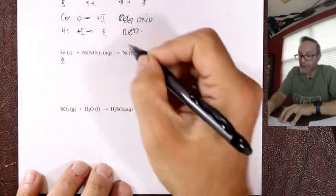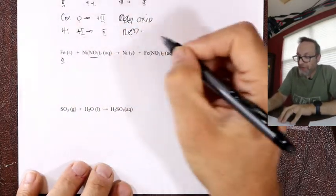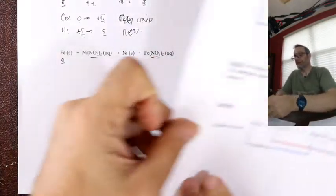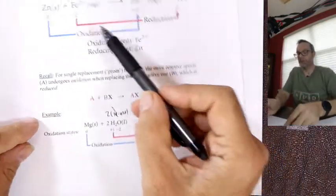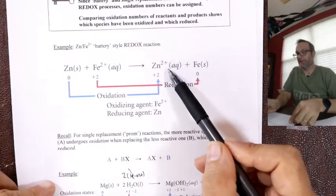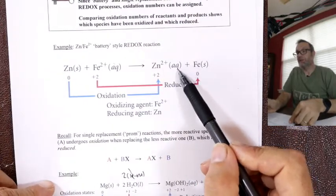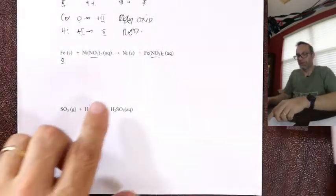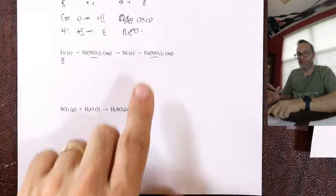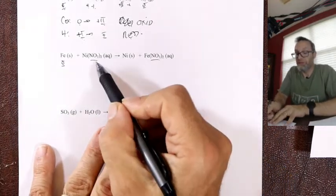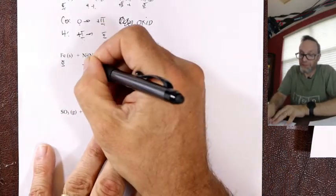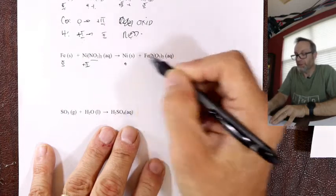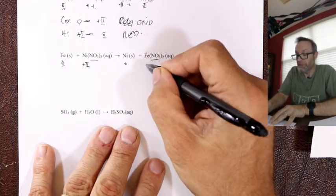For Fe + Ni(NO₃)₂ → Fe(NO₃)₂ + Ni: the nitrate doesn't change — we're only looking at things that change. Nitrates are minus one so that makes nickel plus two. Iron is zero as a solid. Nickel is plus two going to zero, and iron is zero going to plus two.